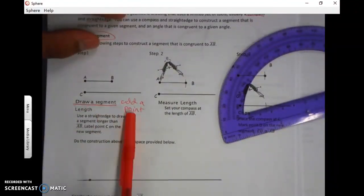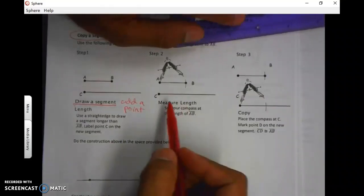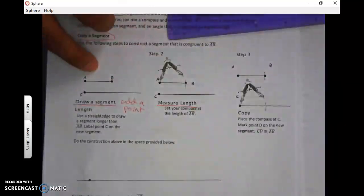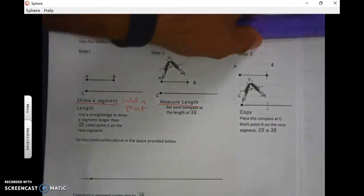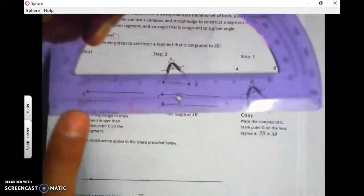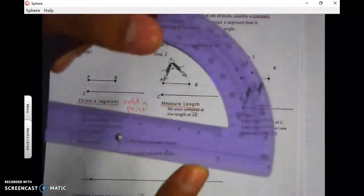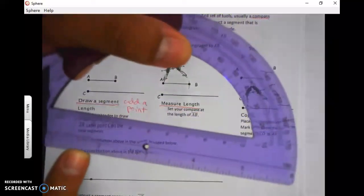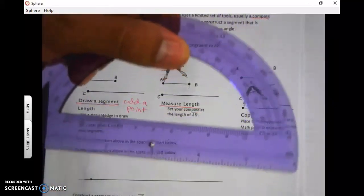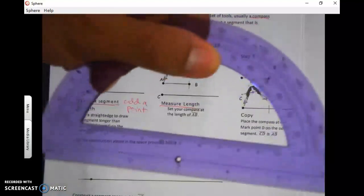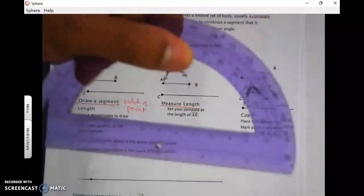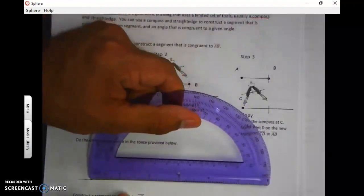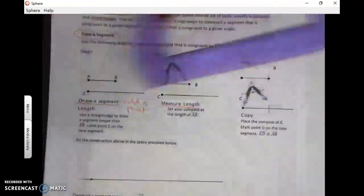Step two says measure length. So here's what we're measuring: up here, this segment right here, AB, is what we're measuring. Now I want you to notice on your protractor you have inches, right? We are not—and I repeat, not—measuring in inches today. We are never going to measure in inches or degrees or anything when we do constructions. The only thing we're doing is making arcs, circles, and straight lines. That's it. So again, you are not going to just say 'that's about one inch.' Don't do it that way.